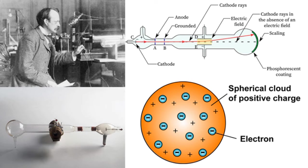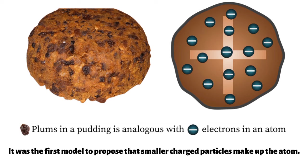Thomson dreamed of being an engineer. At 14 he entered college, but his father's early death made it impossible for him to pay the extra engineering fees, so he changed his major to physics. Thomson's model was called the plum pudding model, named after a popular dessert in England at that time. It was the first model to propose that smaller charged particles make up the atom. Thomson's model lasted less than two decades, but it was the first to propose the existence of subatomic particles.